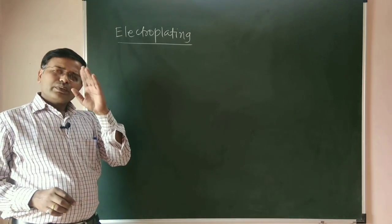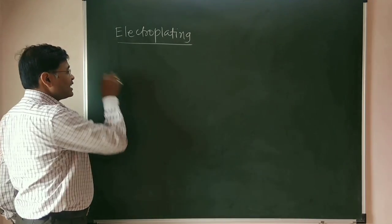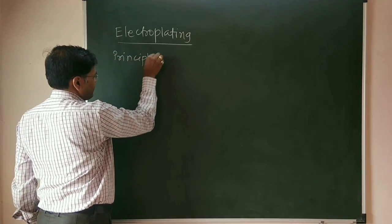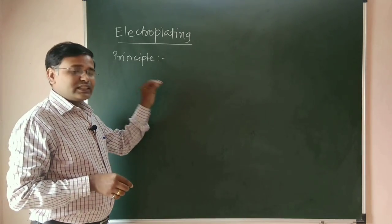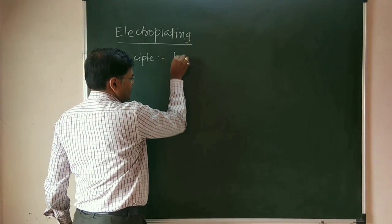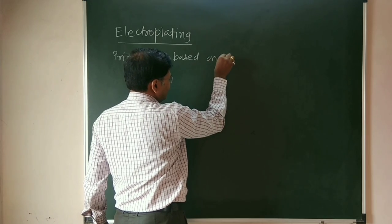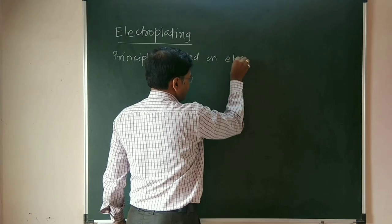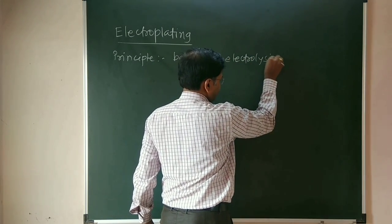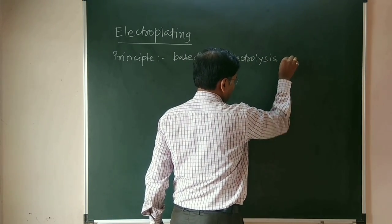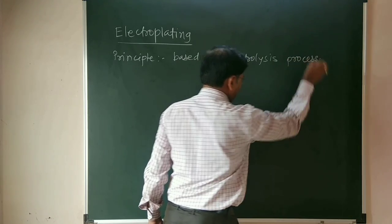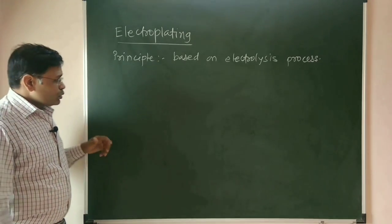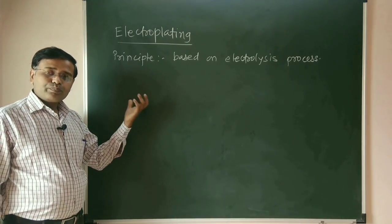First of all, you must write the principle of any concept. The principle of this electroplating process is that this process is based on the concept of electrolysis. So the main word here is electrolysis, and we'll see the method of how to perform this process.